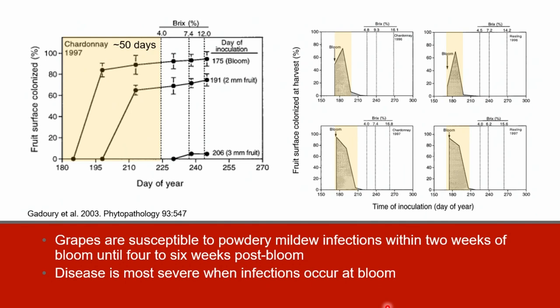Similar to downy mildew of grape, clusters are most susceptible pre-bloom to three to six weeks post-bloom depending on the cultivar, as shown in the yellow shaded areas. In the study shown here, inoculations at bloom and when the grapes are two millimeters in size resulted in 80 to 60 percent of the fruit surface colonized by the fungus, compared to less than five percent when the fruit were inoculated at the three millimeter size.